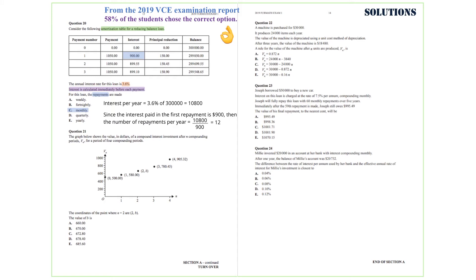Question 21. The graph below shows the value in dollars of a compound interest investment after N compounding periods, VN, for a period of 4 compounding periods. The coordinates of the point where N equals 2 are (2, B). The question is asking for the value of B. From the graph we notice that V0 equals 500 and V1 equals 580. So V1 over V0 equals 580 divided by 500, which is 1.16. Therefore V2 equals 1.16 times V1, which is 1.16 times 580, which is 672.8.